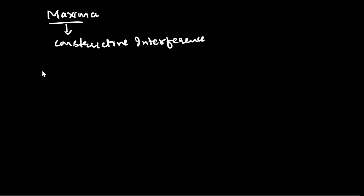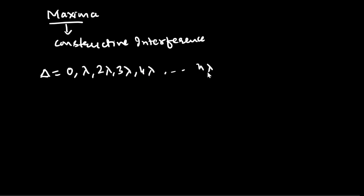Constructive interference happens when the path difference between two waves is 0, lambda, 2 lambda, 3 lambda, 4 lambda, or n lambda — where n equals 0, 1, 2, 3, and so on. If the path difference satisfies this condition, then the waves are in the same phase and we say it is constructive interference.